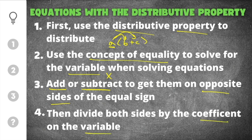For example, if you had 6x, the coefficient on 6x is going to be 6. You will divide by the coefficient on that variable. And finally, you know you have your answer when you have x equals a number — and that is the solution.